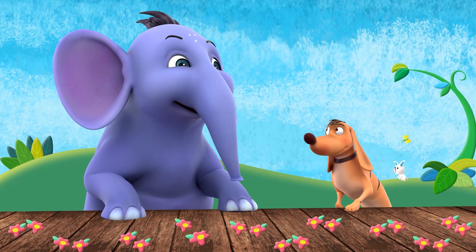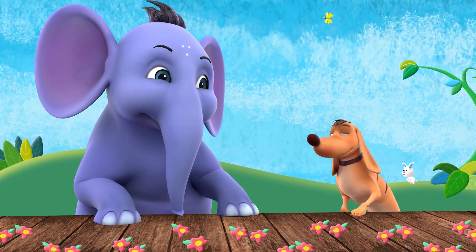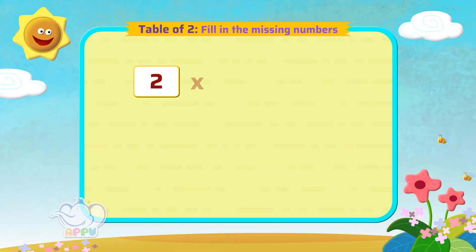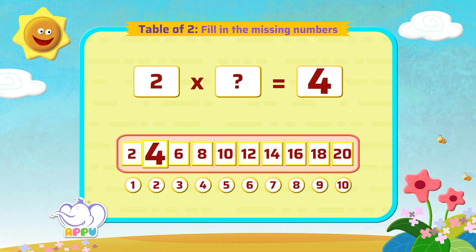Let's fill in the missing numbers for the following. Two multiplied by a number is four. What is the missing number? To get four, we have to skip count two twice. So the missing number is two. Bingo!